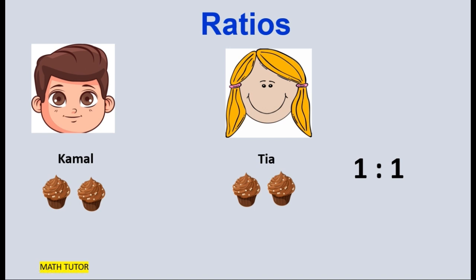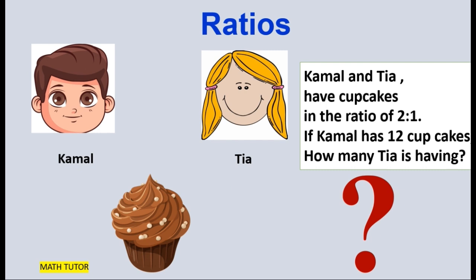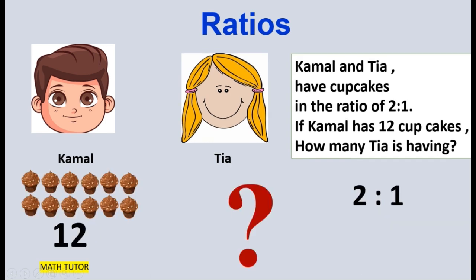Suppose Kamal and Tia have cupcakes in the ratio of 2 is to 1. Now if Kamal is having 12 cupcakes, how many cupcakes does Tia have? Kamal has 12 cupcakes and they have cupcakes in the ratio of 2 is to 1, meaning Kamal is having twice or double the cupcakes Tia has.